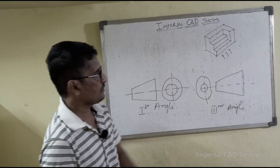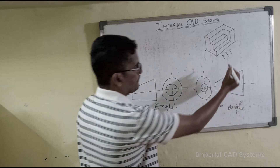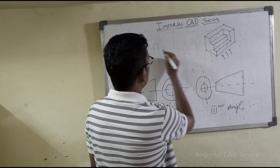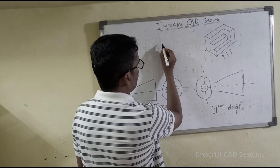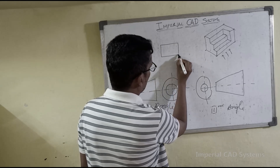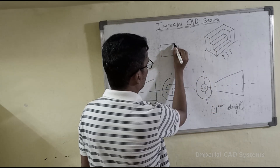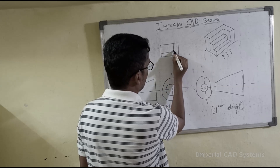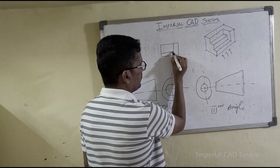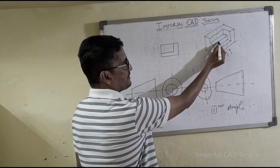I will show the orthographic projection of this part in first angle projection. In the arrow direction, take the front view. Here, first create a rectangle — a rectangle block. You can see this edge and this edge to the front side. This edge and this edge coincide, so you can see only a single edge.